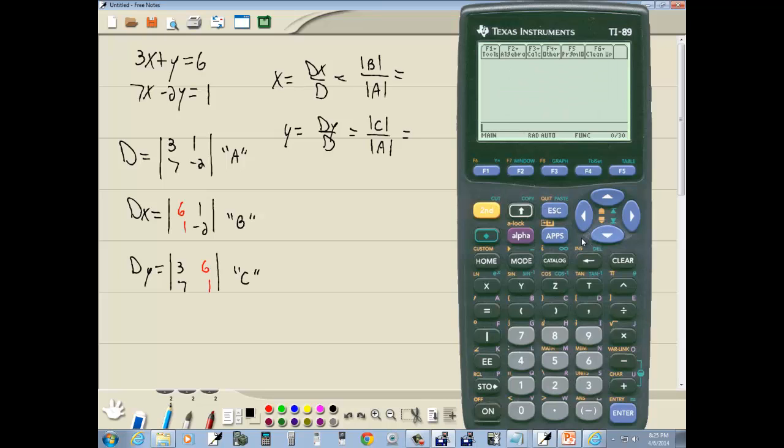Okay so now we have our matrices entered and if I did alpha and choose A and press enter you see you can actually see the matrices.